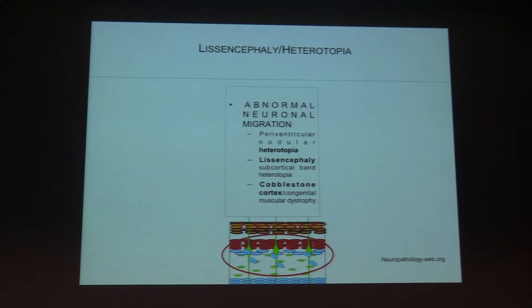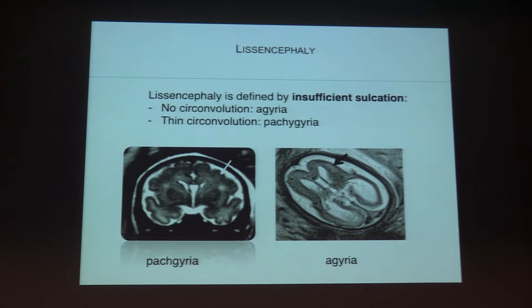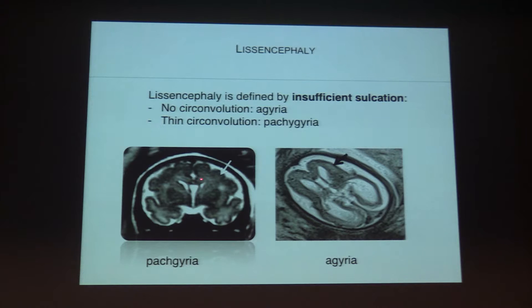Now let's talk about lissencephaly. We saw the anomalies of cellular proliferation, and now the anomalies are due to neuronal migration, which give two types of lesions. Pachygyria is this aspect without normal sulci and with a thick cortex. Agyria — you have the complete absence of sulci — and this will be the main sign to describe lissencephaly.